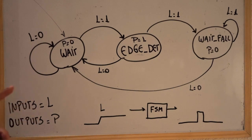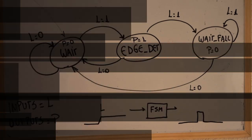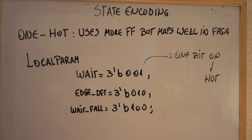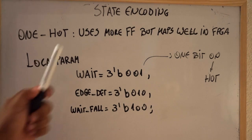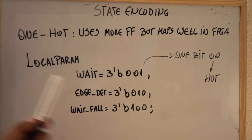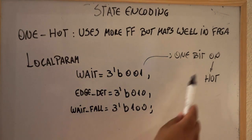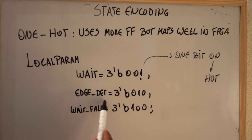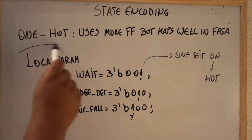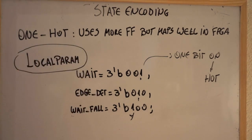Before switching to the lab, let's talk about how we encode these states. In the previous example, the Level-to-Pulse Converter has three states. We are going to use one-hot encoding, which uses more flip-flops but maps well in the FPGA. In one-hot mode, in every state just one bit will be one. So in state Wait, bit one is here; in Edge Detect, the one is here; and in Wait Fall, it's here. We are also using a new keyword called a local parameter, which defines parameters that are local to your module.